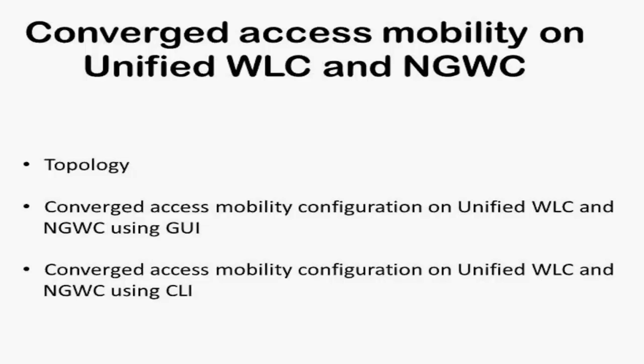To support seamless roaming between next generation wiring closet as well as unified wireless LAN controllers, we need to enable new mobility architecture on the unified side. The configuration section will explain how to configure mobility group name, creating different switch pair groups, and adding mobility agents under it. Also, how to add peer mobility controllers as a member of the mobility group.